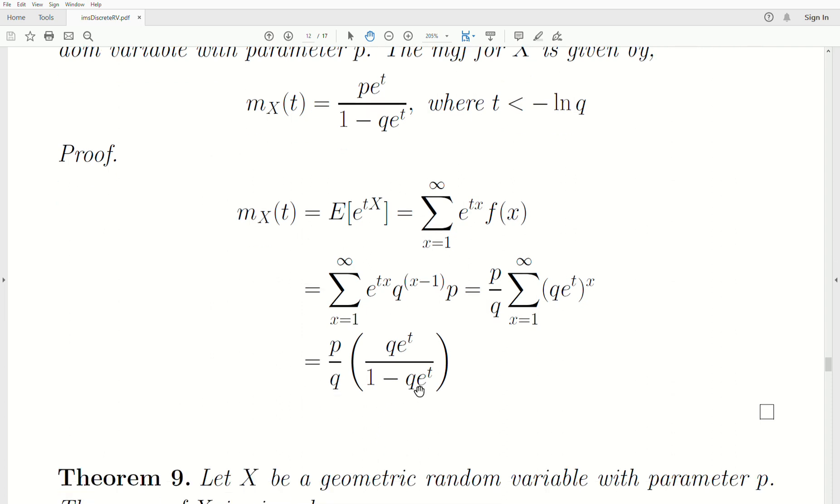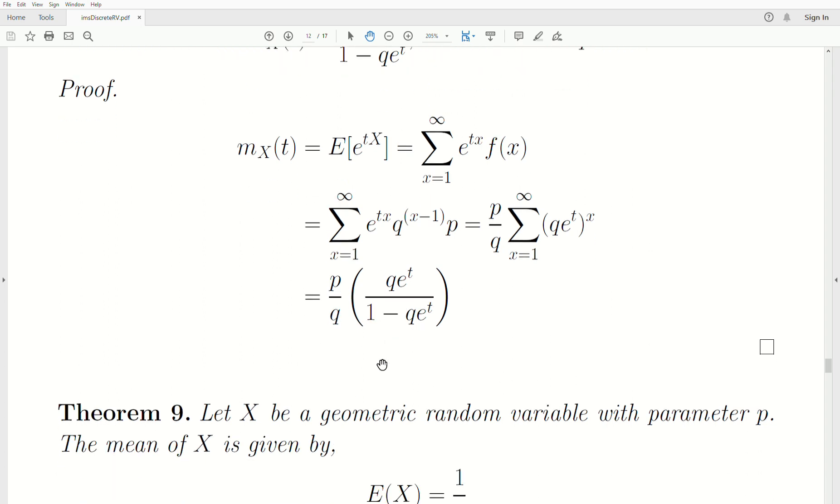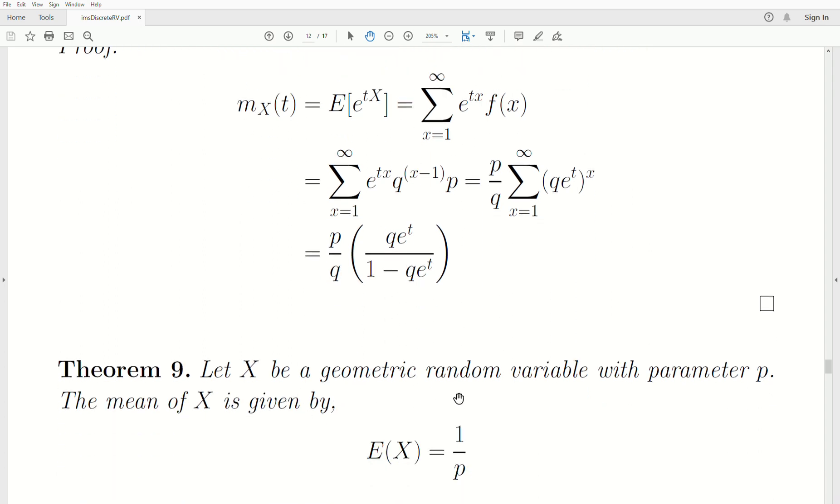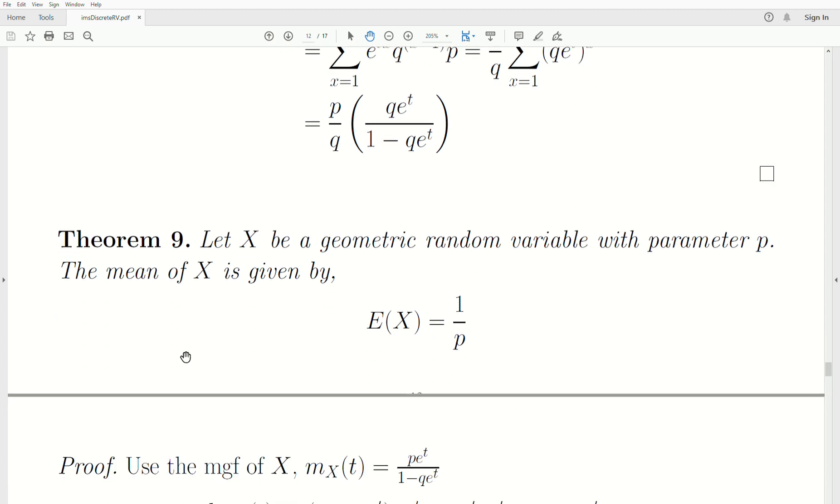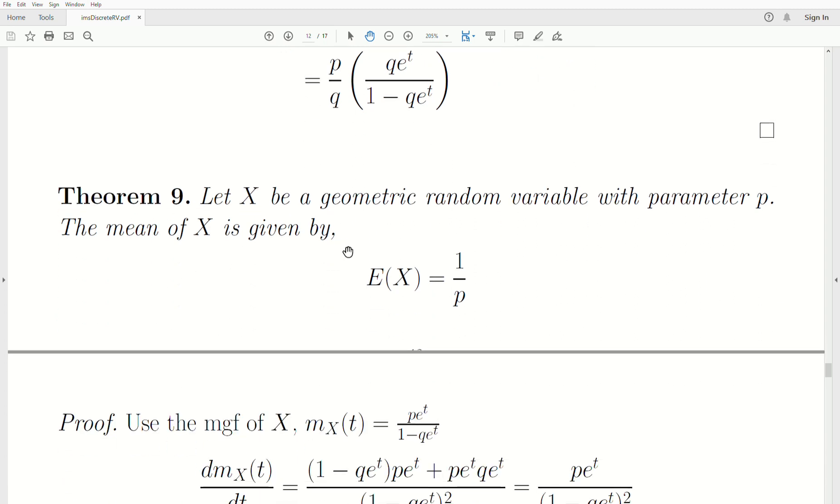And we're going to use that to derive moments, the mean, the second moment, the variance. We're going to use this moment generating function. So let X be a geometric random variable with parameter P. This is theorem nine. The mean of X is given by one over P. Expected value of X is one over P.